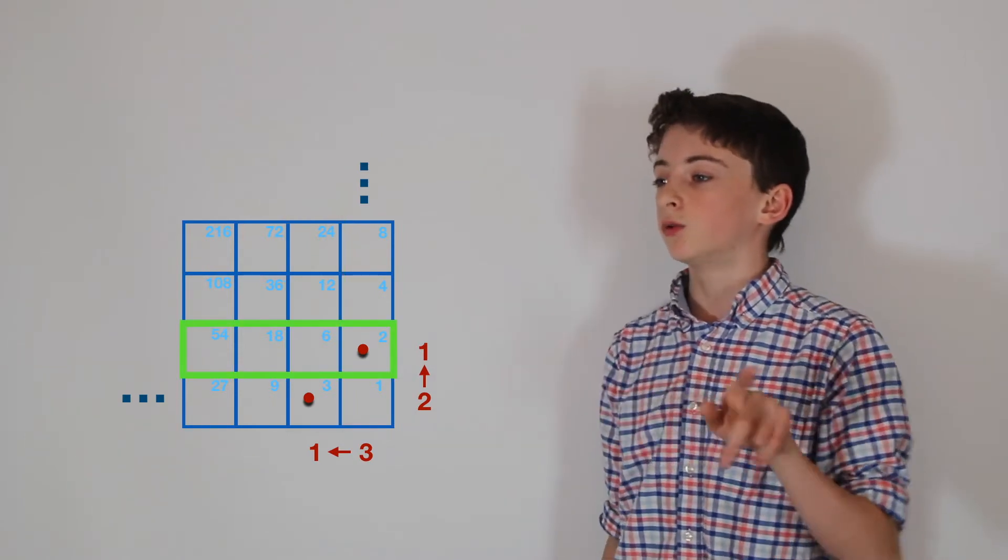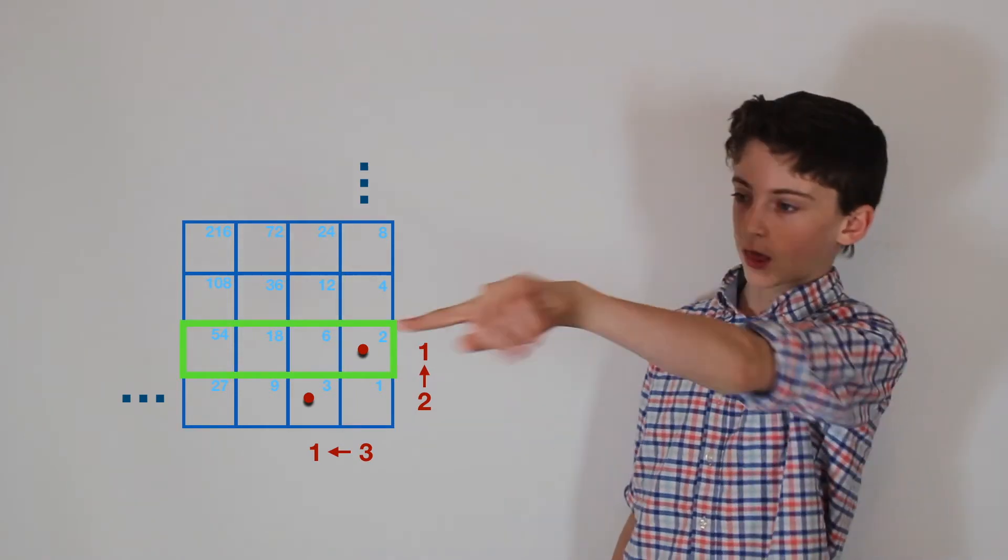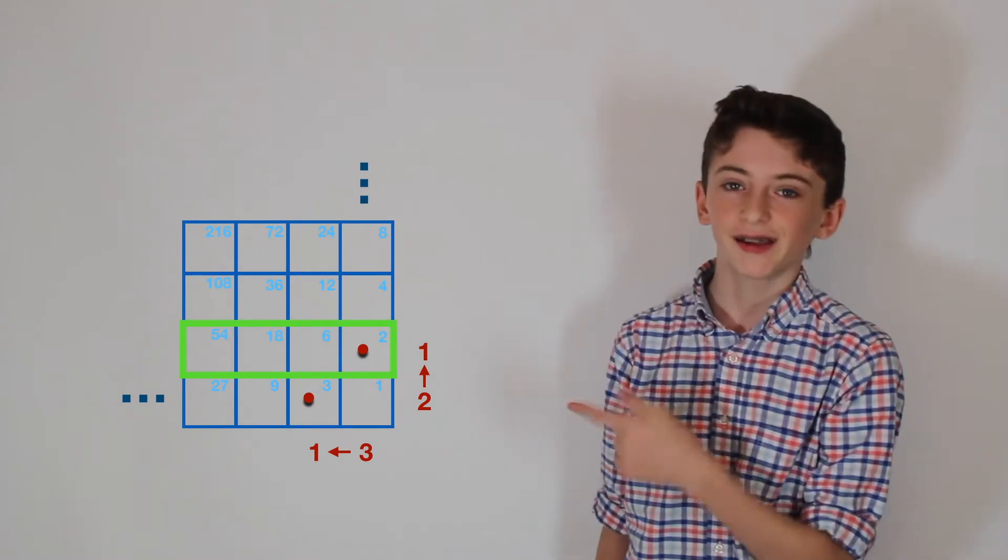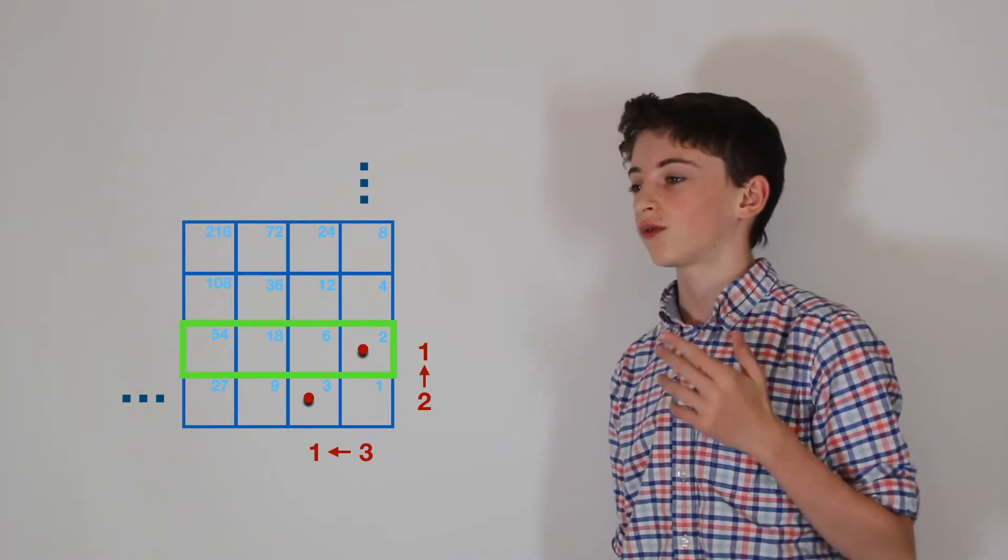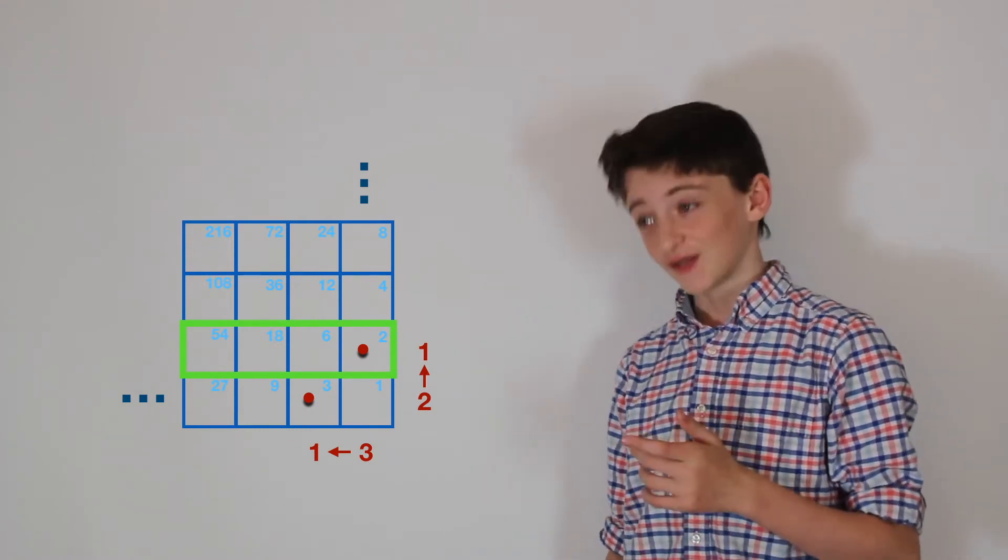And the same with this, only it's base three, because that's the way the three is going in that arrow. Two times three is six, six times three is eighteen, and eighteen times three is fifty-four.